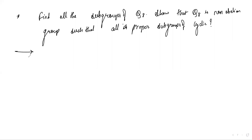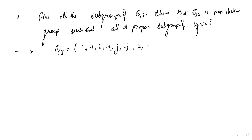The question asks us to find all subgroups of Q8 and show that Q8 is a non-abelian group such that all its proper subgroups are cyclic. Q8 is the set {1, -1, i, -i, j, -j, k, -k}.